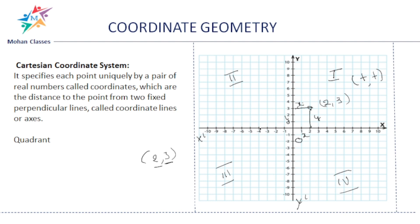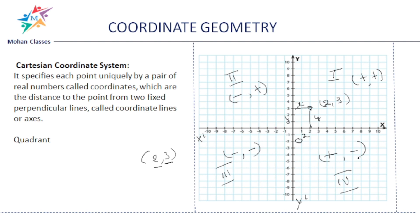In the second quadrant, the x-axis is negative and the y-axis is positive — minus, plus. In the third quadrant, both x and y are negative — minus, minus. In the fourth quadrant, x-axis is positive and y-axis is negative — plus, minus. This is very important: first quadrant (plus, plus), second quadrant (minus, plus), third quadrant (minus, minus), fourth quadrant (plus, minus).